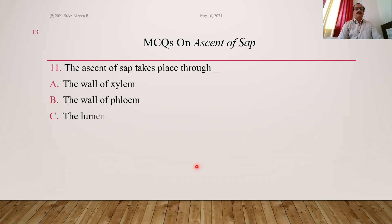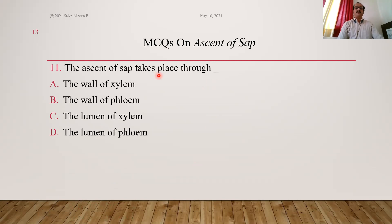Question 11: The ascent of sap takes place through which structure? It is a well-known fact that ascent of sap — the upward movement of water — takes place through the xylem, specifically through the lumen (cavity) of the xylem, not through the wall. This has been proved by the paraffin blocking experiment. Option C is the answer.